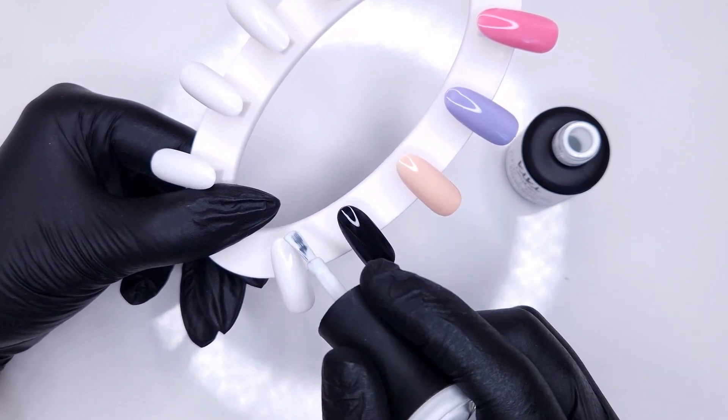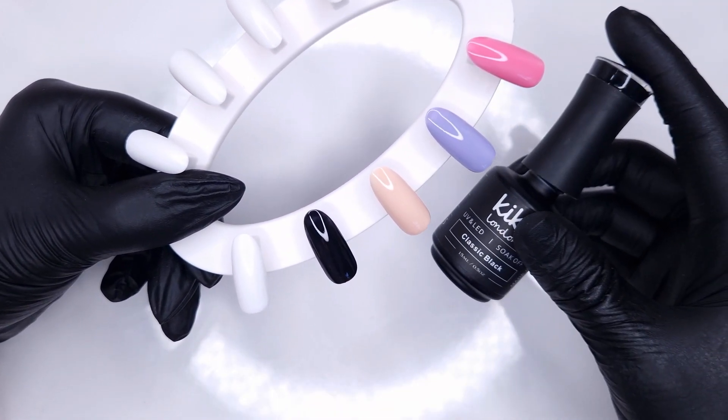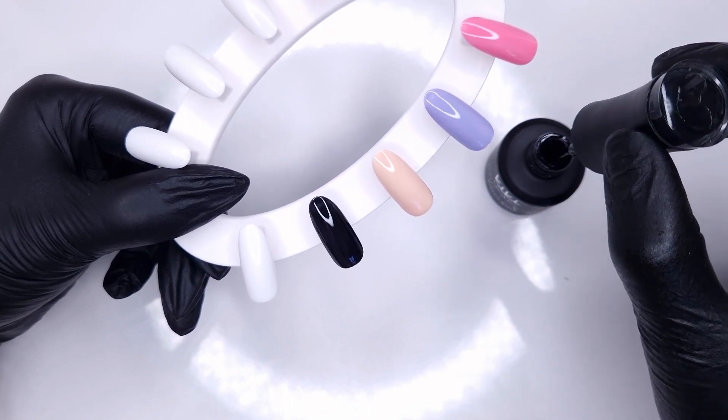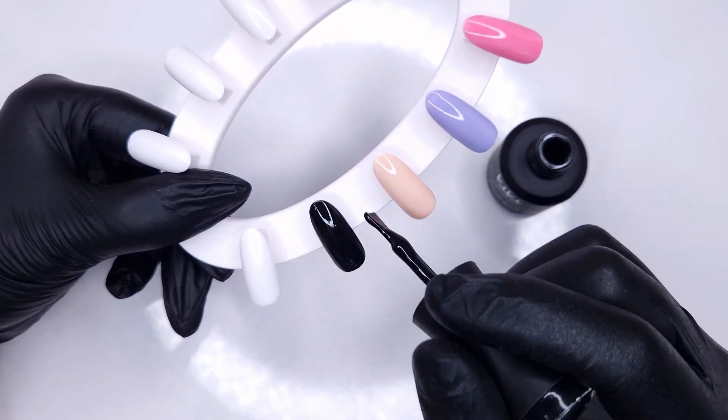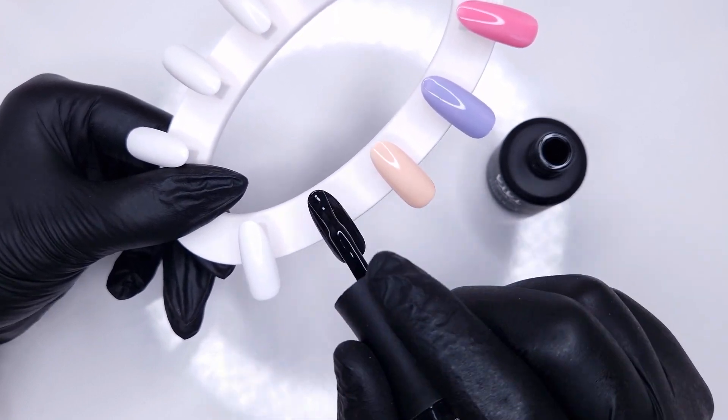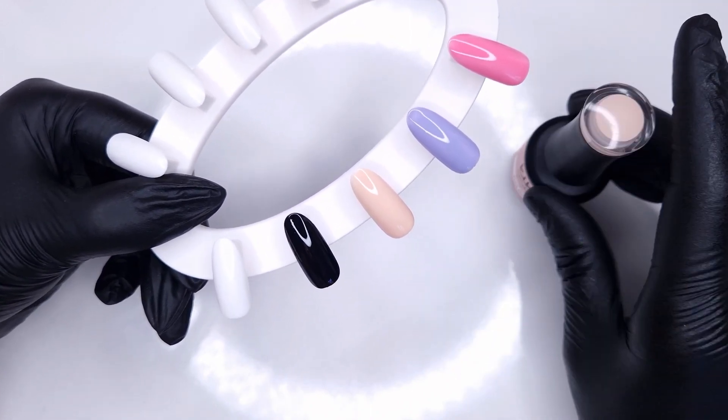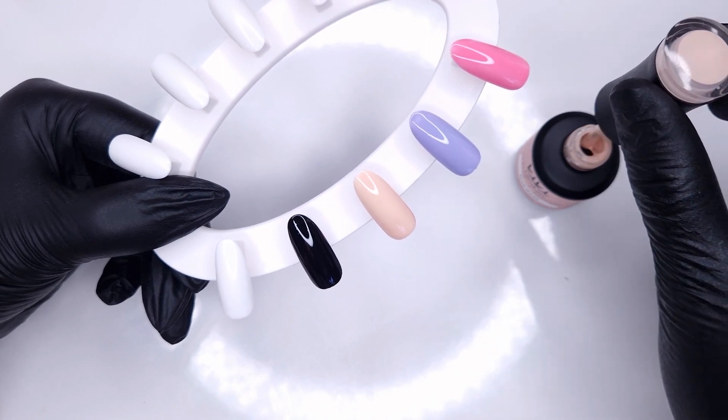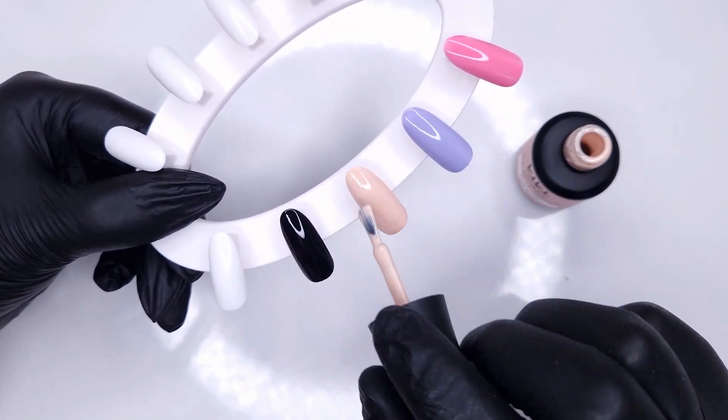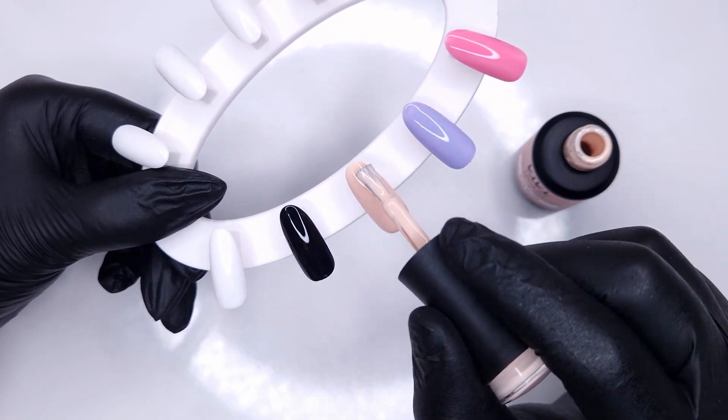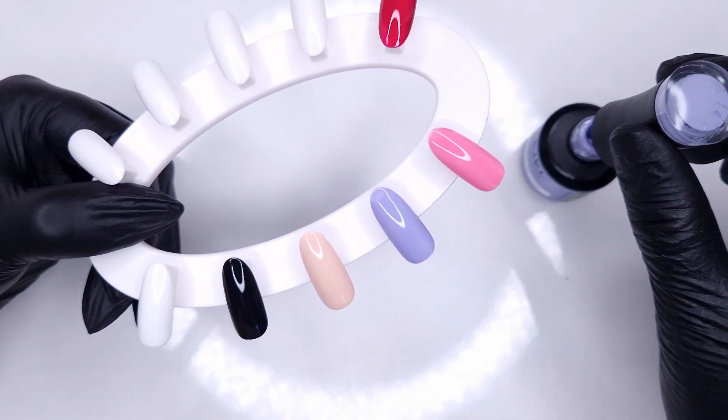Now all of the Hema Free gel polish colors do only require a 30 second cure if you are using an LED lamp. If you're using a UV lamp you may want to do a slightly longer cure of one to two minutes but we would highly recommend to use the Kiki London lamp. So I'm going to come in now and apply my second coat of color to all of these. The consistency is exactly the same in my opinion or very similar to what I've worked with amongst all of the Kiki London colors.